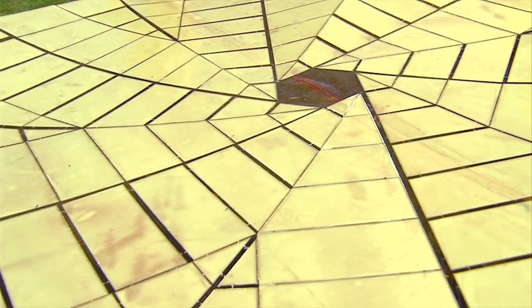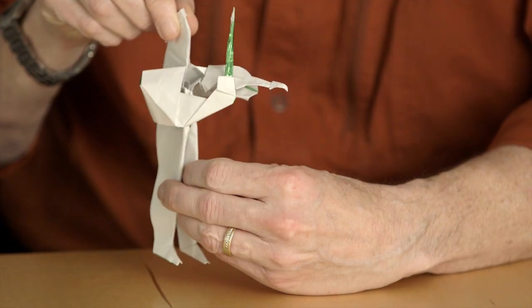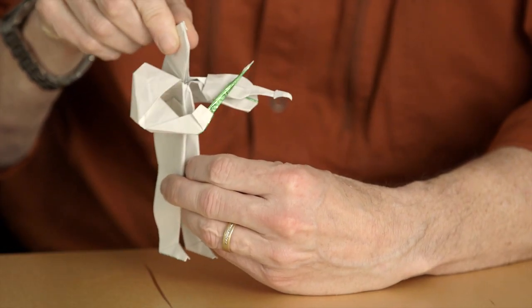This is a 1-20th scale prototype of a solar array for a solar panel for space. The inspiration for this design is origami, the Japanese art of paper folding.